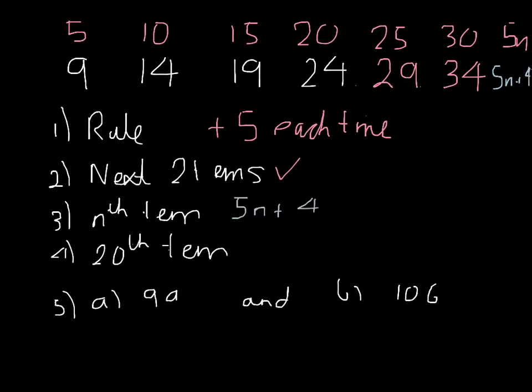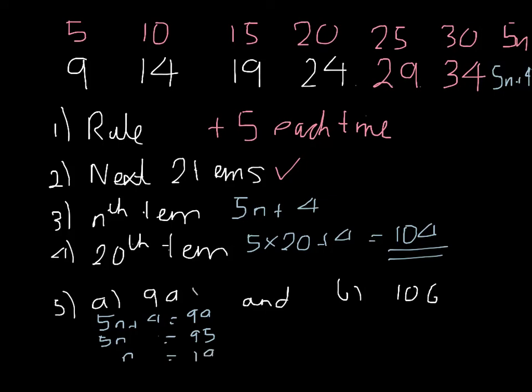We could use that to work out the 20th term. We'd just do 5 multiplied by 20, add 4, which would be equal to 104. And we'd check if 99's in there. Well, we could let 5n plus 4 equal 99 and see if we can find a whole number n. Therefore, 5n would be equal to 95. And indeed, n would be equal to 19. So yes, it is.